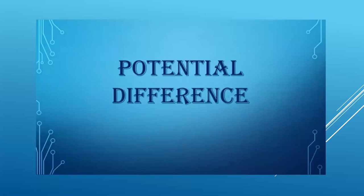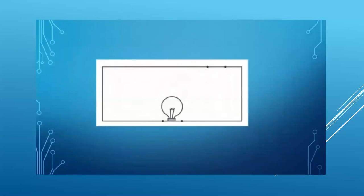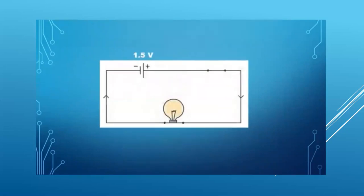Potential difference: similar to the height of a waterfall or the temperature difference of hot and cold bodies, the difference between the potential of two points — that is, potential difference — is important. Let's do an activity. Take a connecting copper wire and connect it to the circuit as shown in the figure. No current is seen to flow in the bulb. Now connect a 1.5 volt dry cell in the same circuit as shown. Now the bulb glows, showing that current is flowing. Electrons in the wire flow due to the potential difference between the two ends of the dry cell.